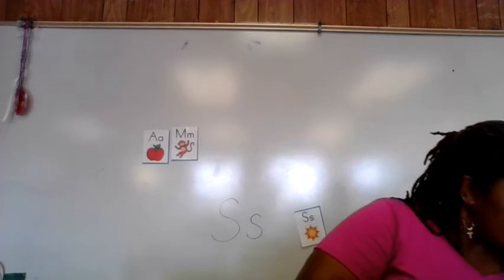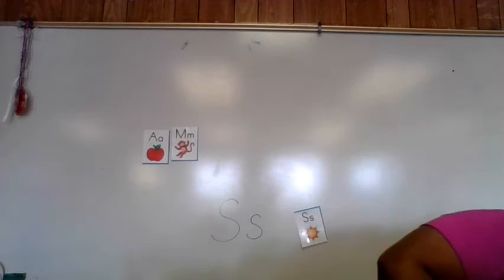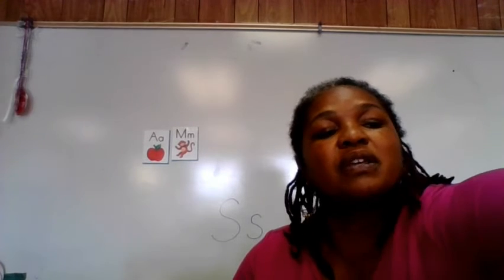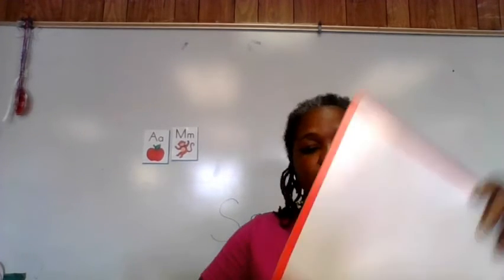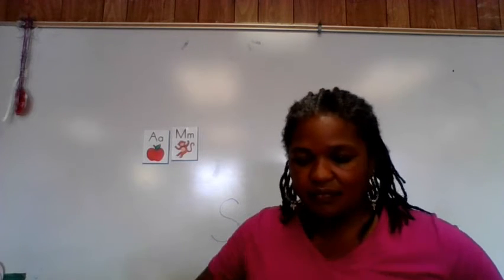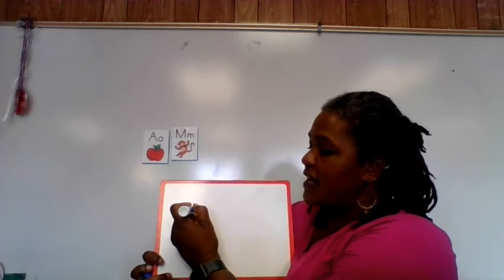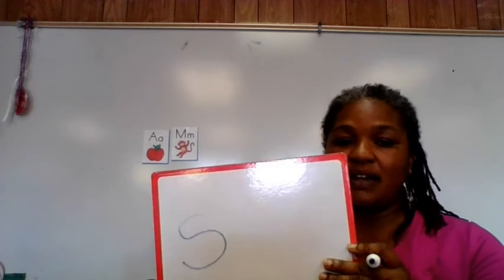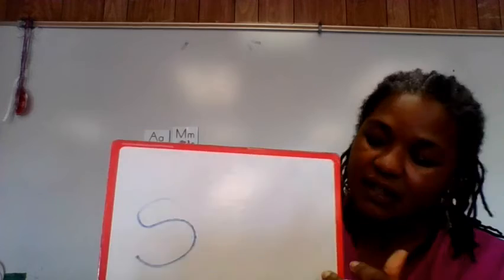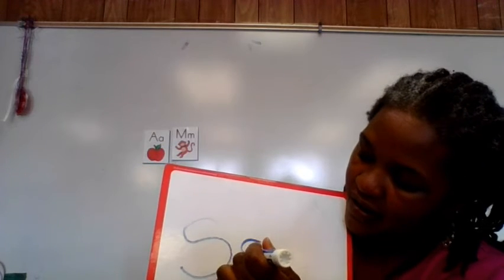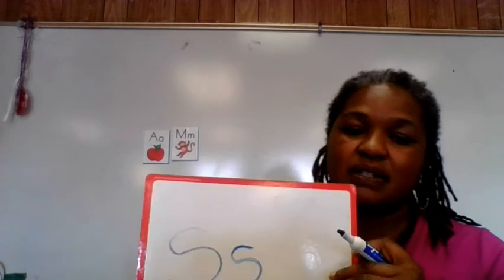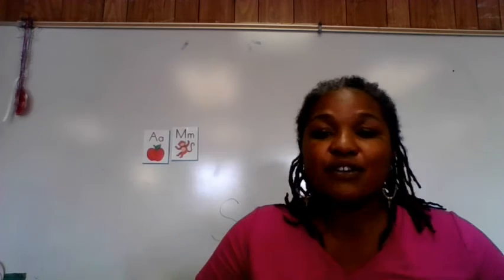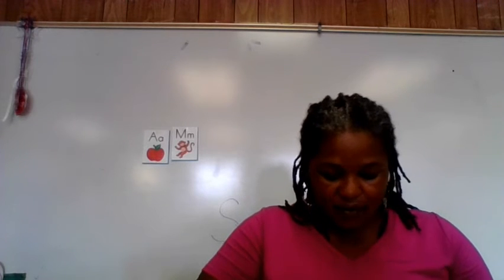And I'm going to write it on the board closer to you so you can see it. These are the boards that we use at school. Here's the S: start at the top, circle around, down. Lowercase s: start in the middle, circle around, down. This is the letter S. You try to write the letter S at home.